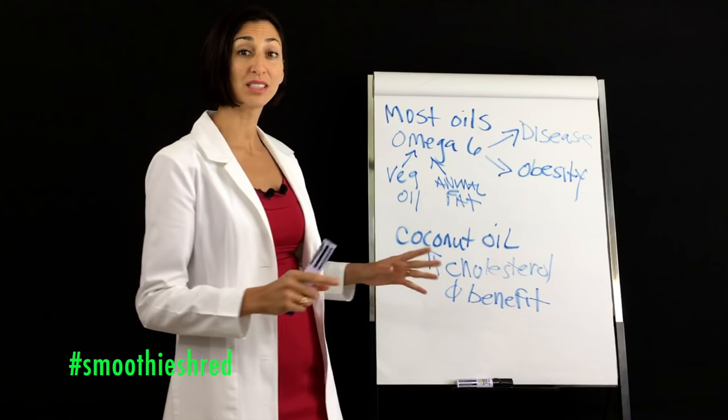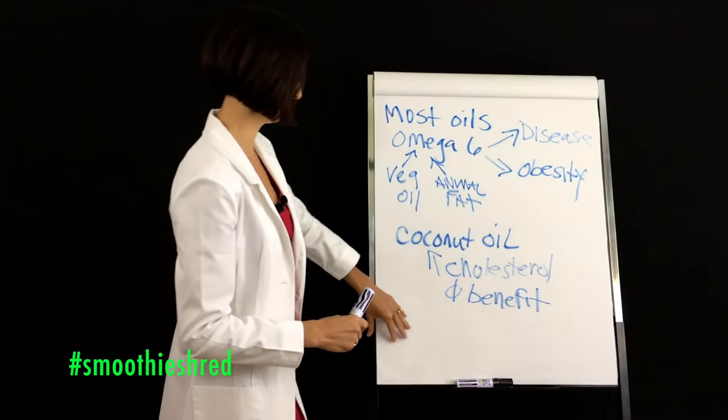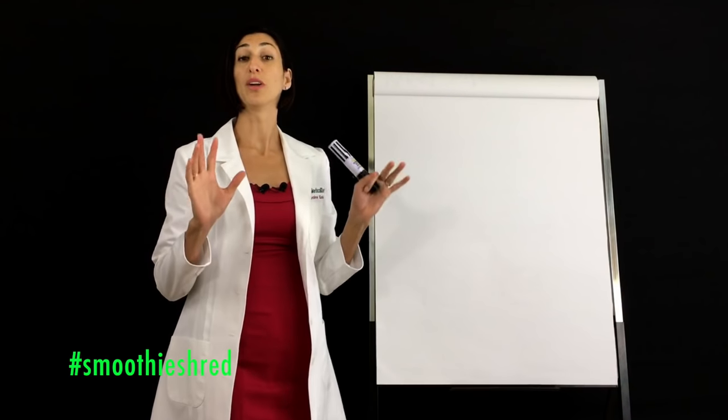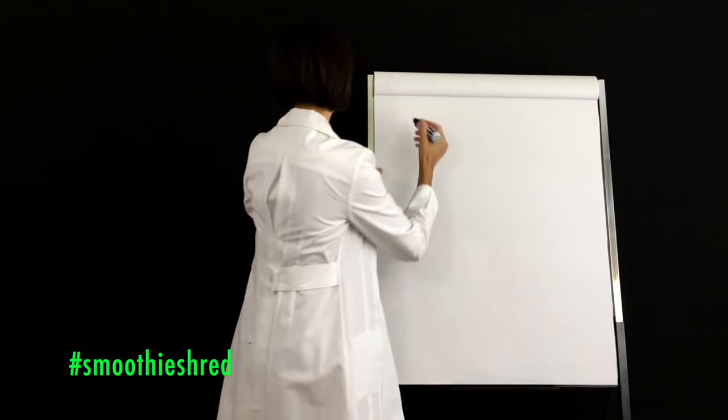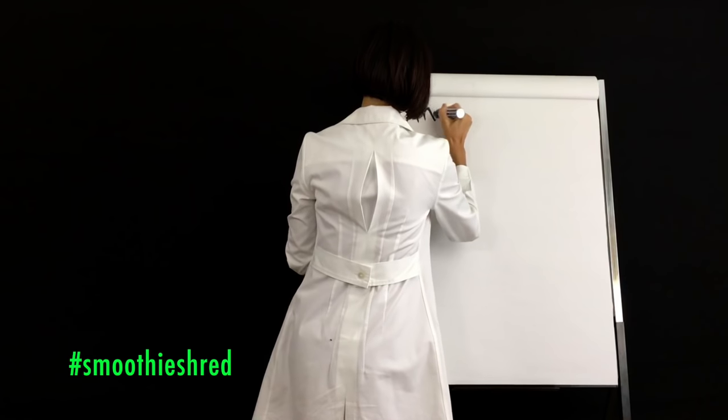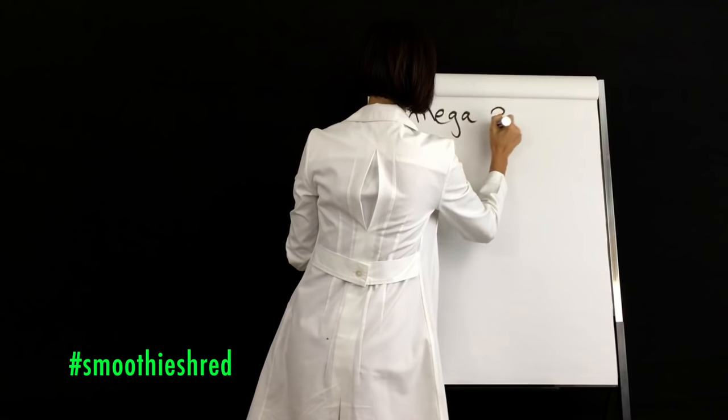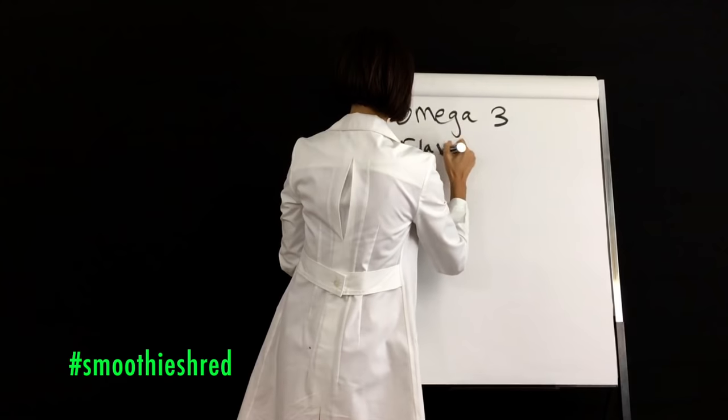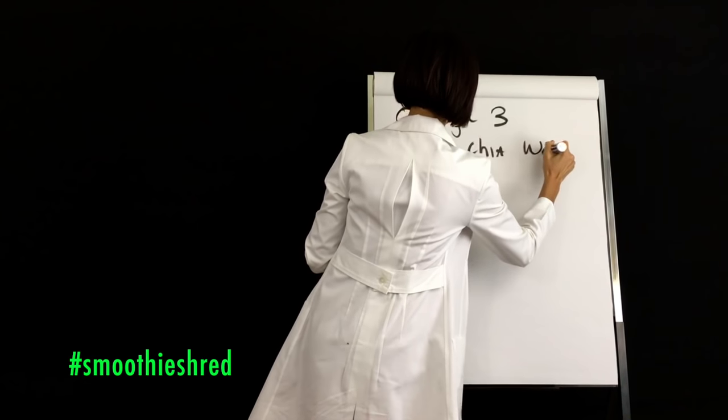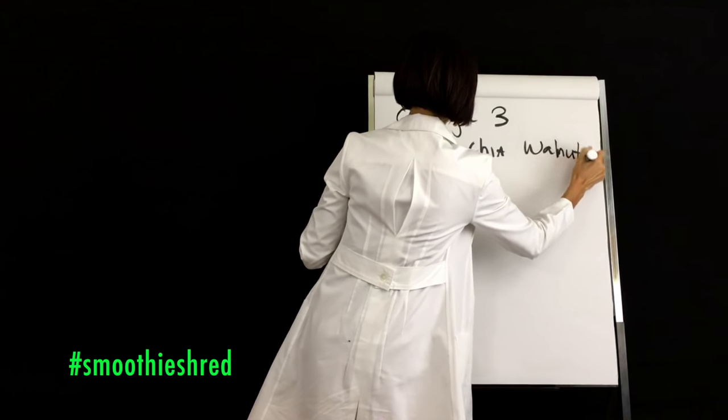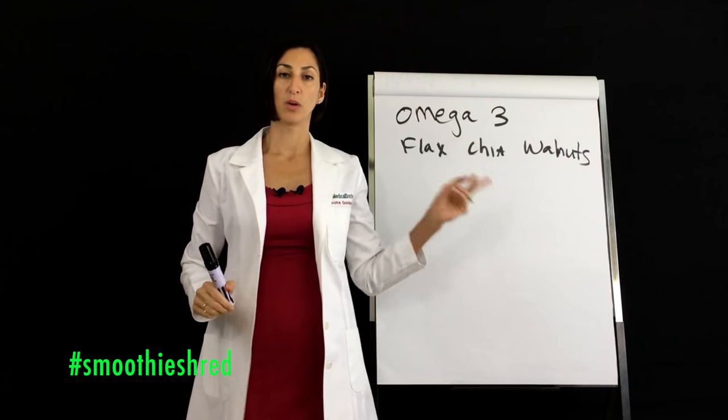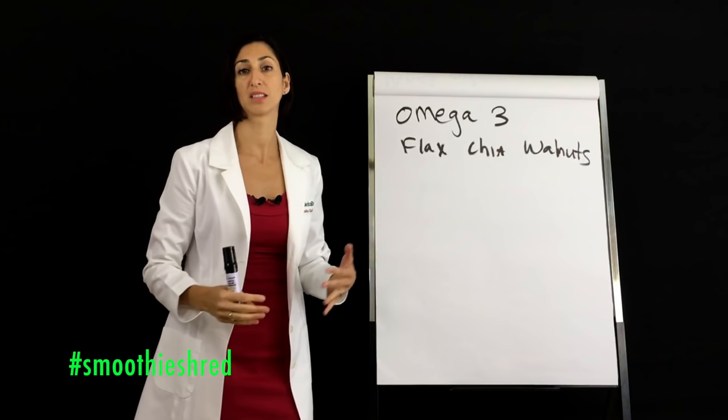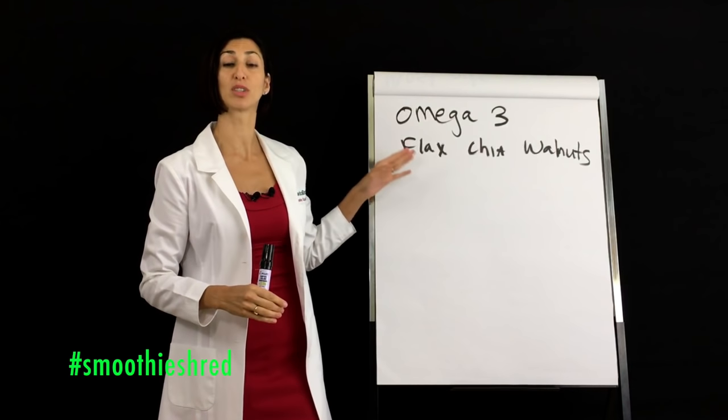So what about the one fat that Thomas and I suggest you consume in your smoothies? The one fat that Thomas and I suggest you use is omega-3s. And when we talk about omega-3s, we're talking about flax seeds, chia seeds, and walnuts. We chose those three because these three have more omega-3s in them than omega-6 or other fats, so we consider them a source of omega-3s.